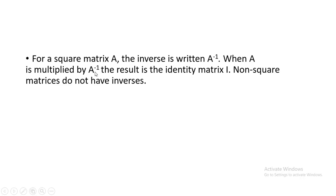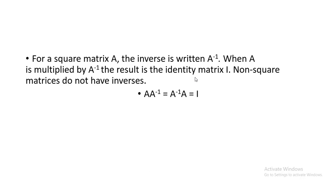When A is multiplied by A inverse, the result is the identity matrix. Let's say we have a matrix A and we find its inverse, that is A inverse. If we multiply A and A inverse together, we need to get an identity matrix. If we don't get an identity matrix in the result, that means the inverse was calculated incorrectly.